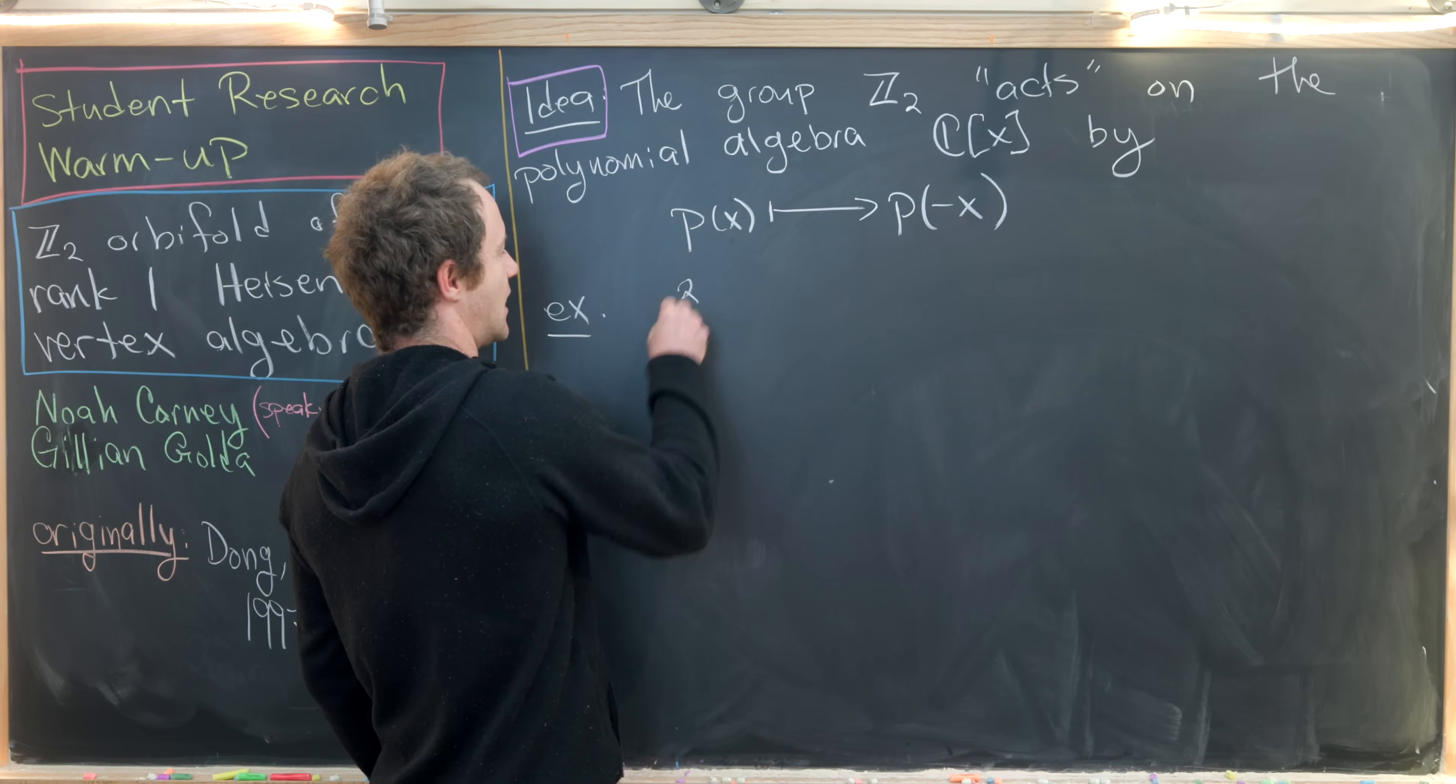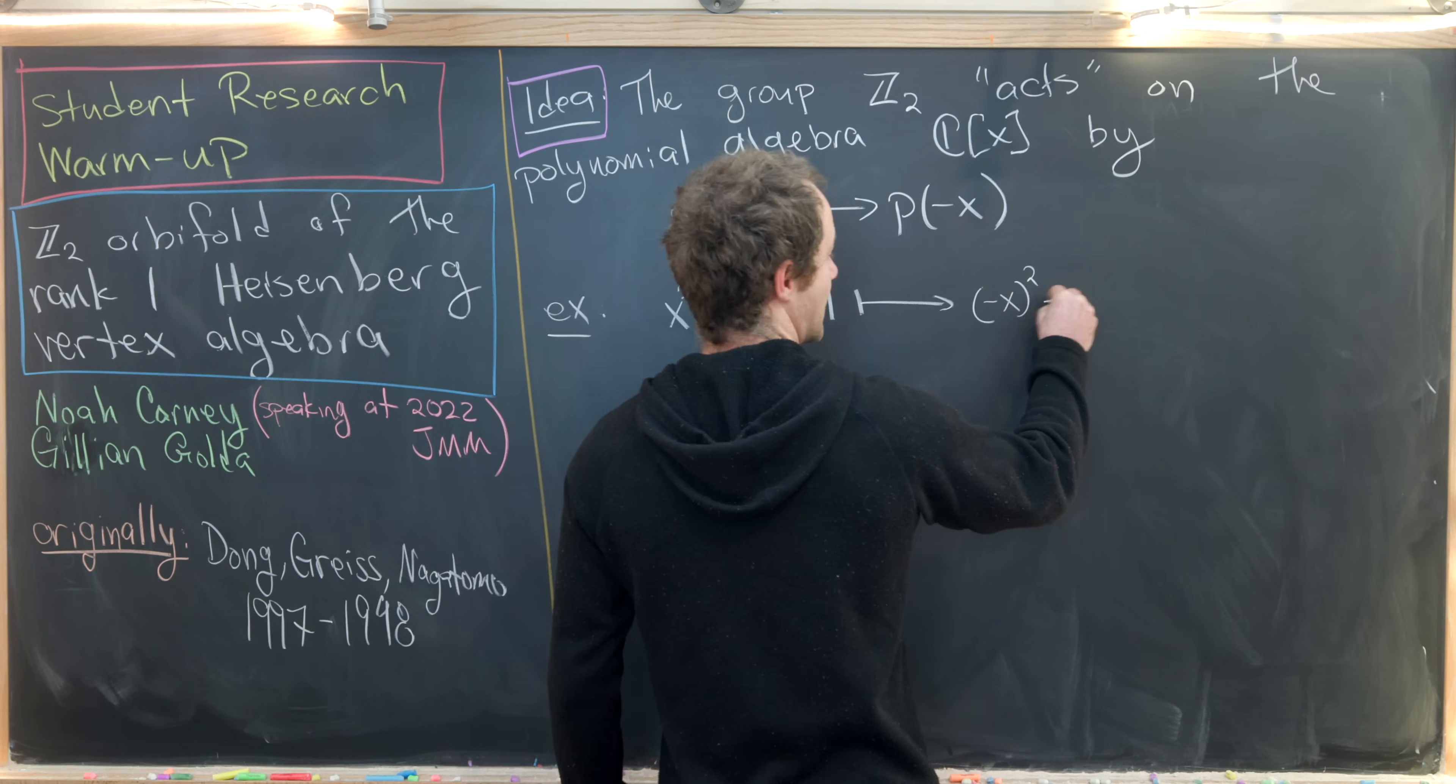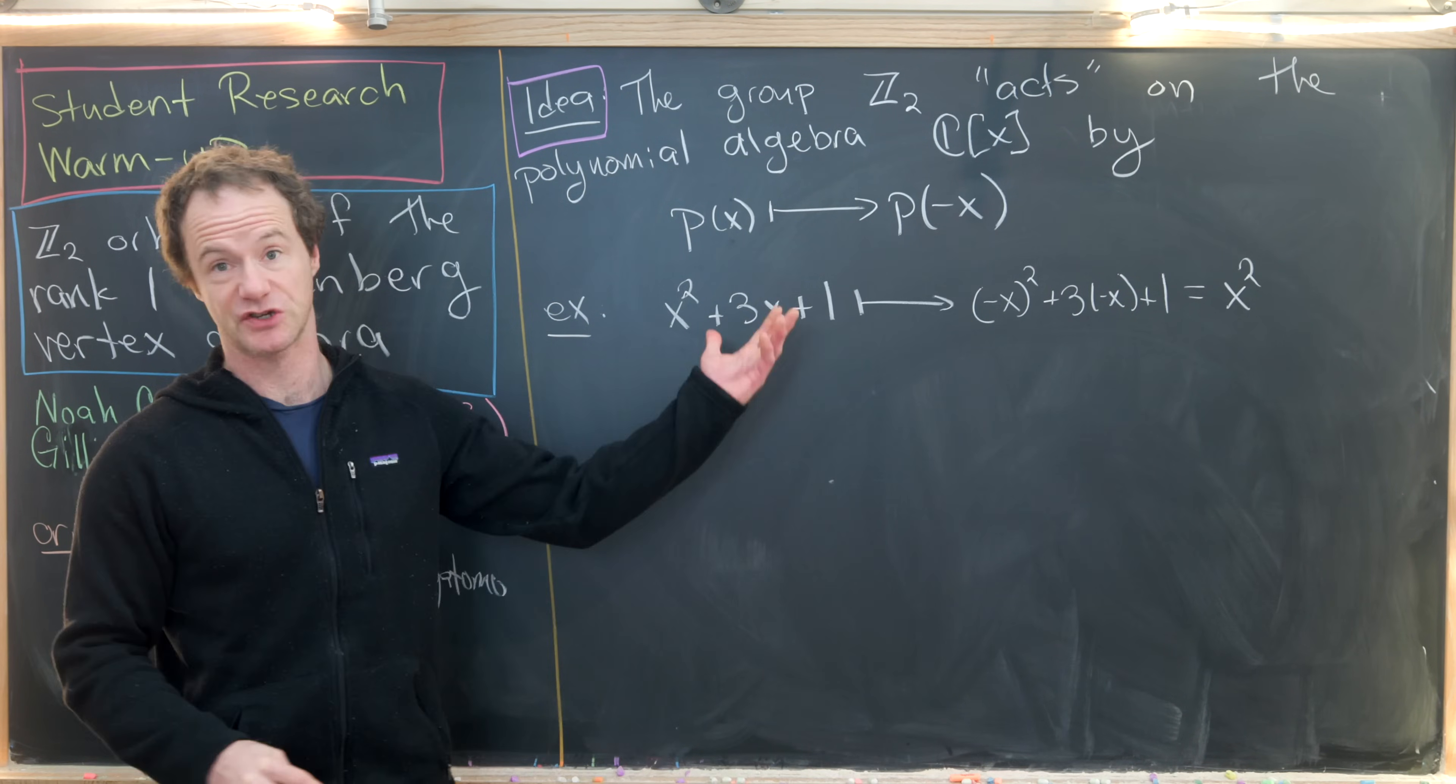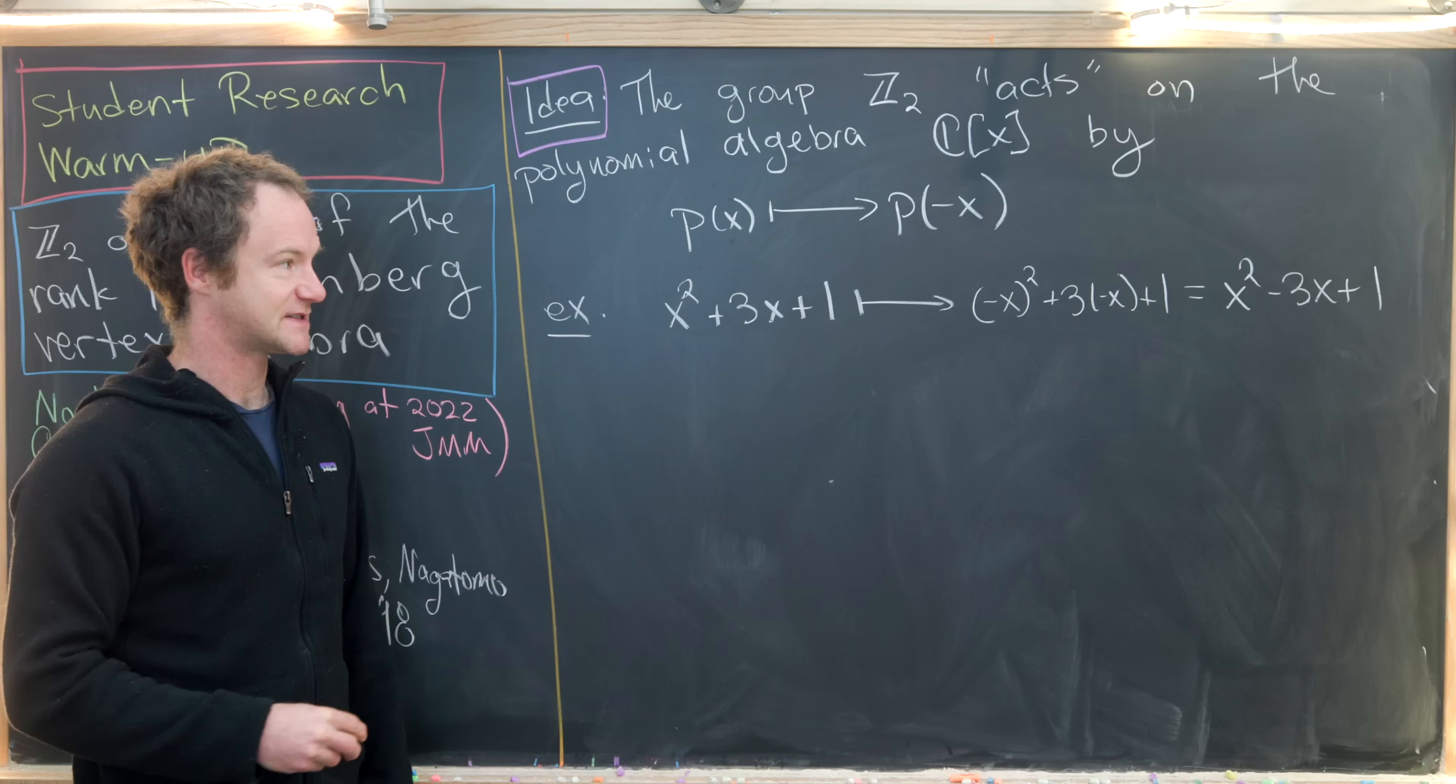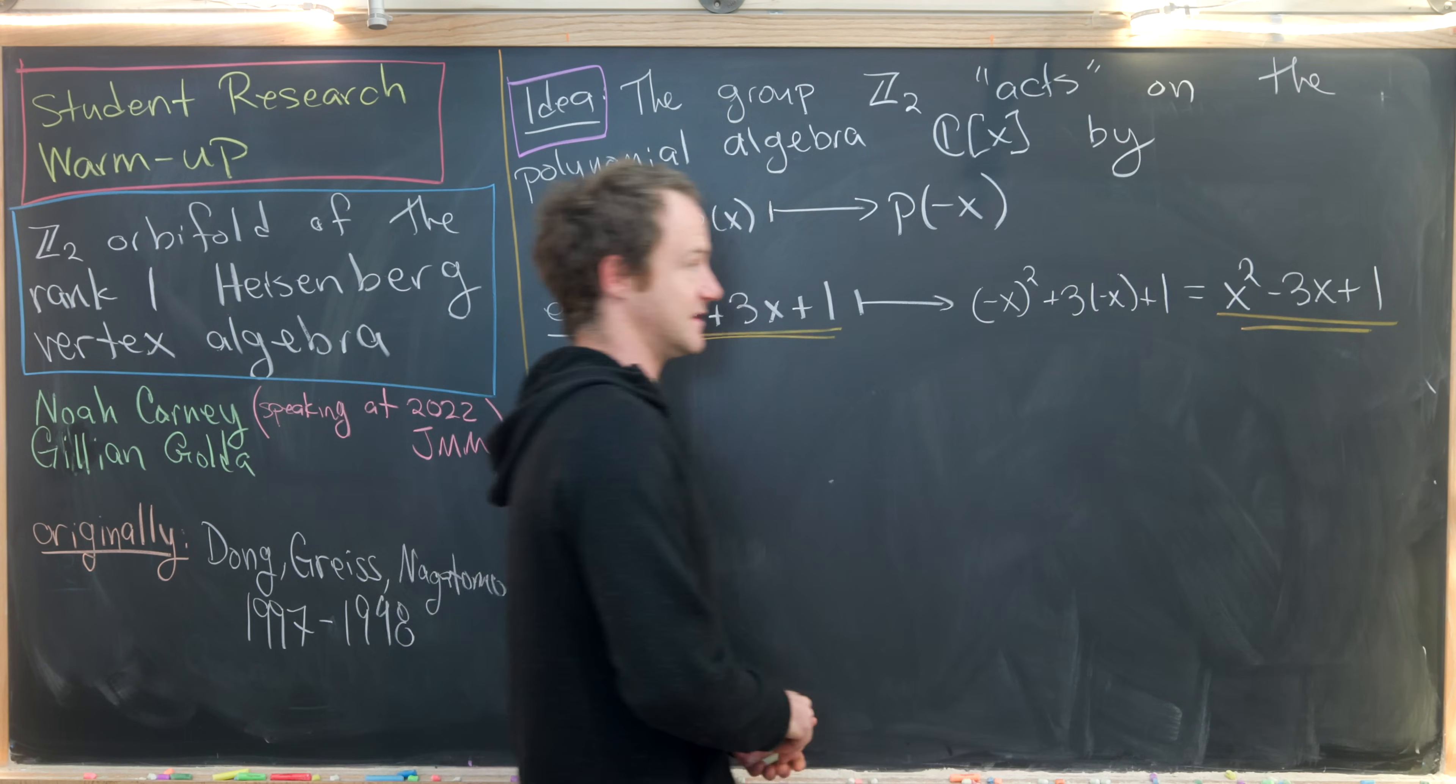The polynomial X squared plus 3X plus one would turn into negative X quantity squared plus three times negative X plus one. Notice some of those negatives disappear because we're squaring them, but some of them don't. We end up with X squared minus 3X plus one. The important thing to notice here is that these polynomials are not the same.